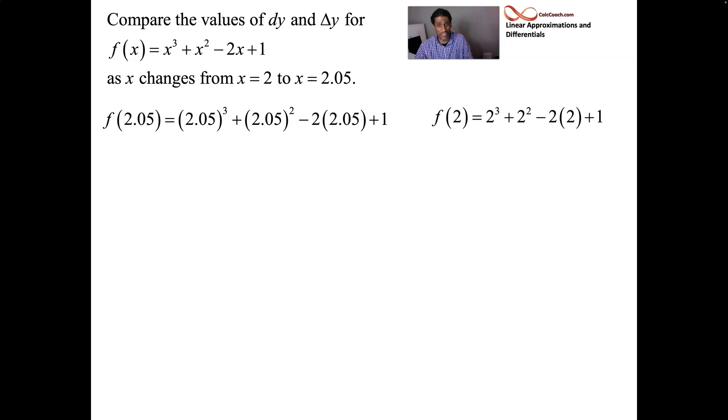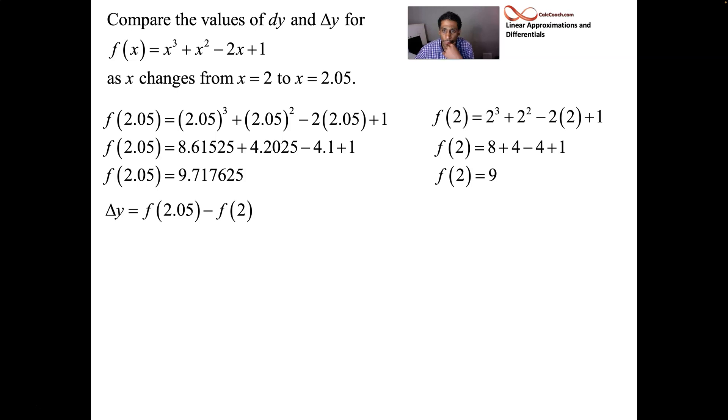Now, with this right here, plugging in 2.05, that's for a calculator. That's not for a human to do. But here it is. The calculator spits out that decimal number, 9.717625. But that's not for a human to do. So we can get the actual change in the function. Remember that? The delta y, the triangle y. That's going to be the difference between these two. And so we can see it's 0.717625.